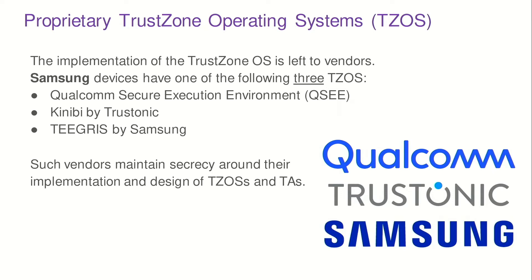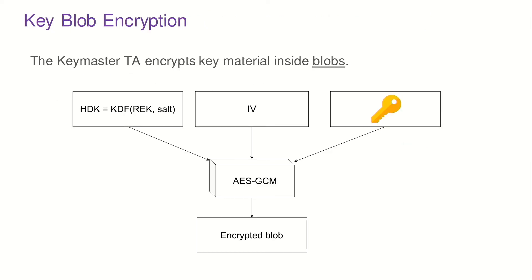We wanted to take a look at it, which meant we needed to do reverse engineering. The first thing we wanted to find out is how those keys are actually encrypted. Not very surprisingly, the keys are encrypted using AES-GCM, and the key used is a hardware-derived key from a key derivation function applied to a root encryption key protected in hardware, accessible only inside TrustZone, combined with a specific salt for the blob. We also have an IV used for the encryption.